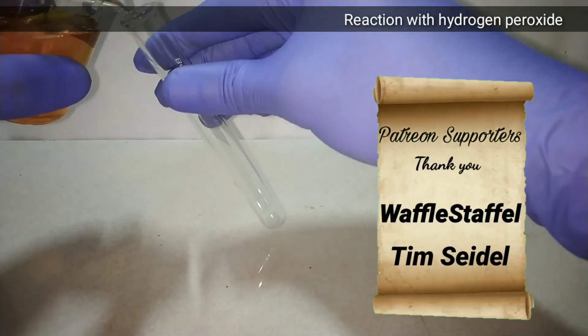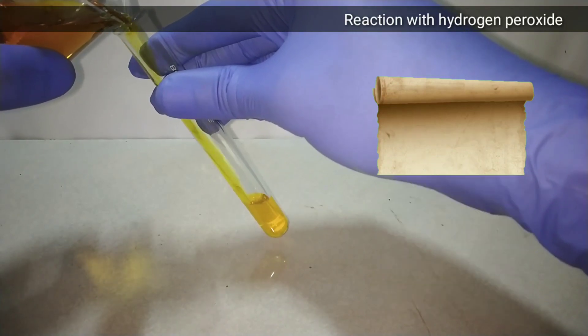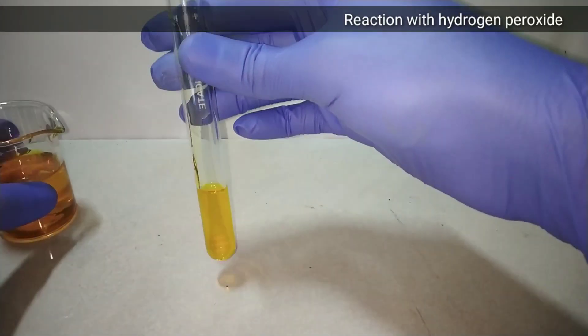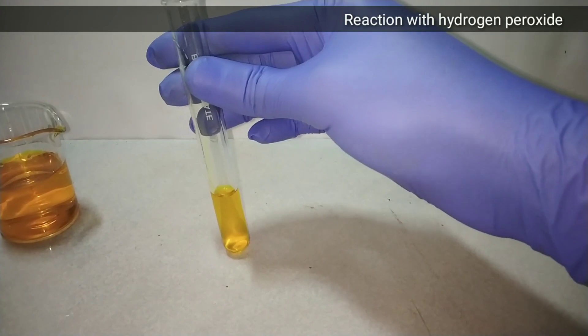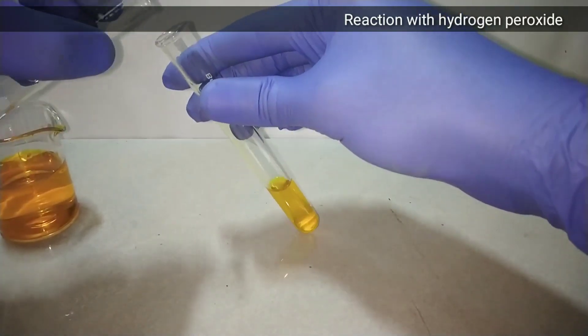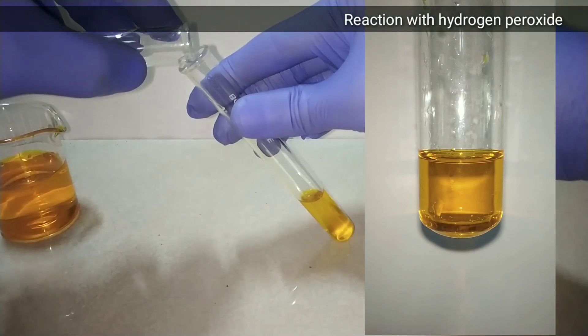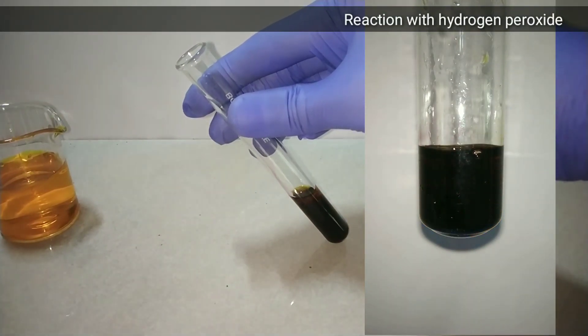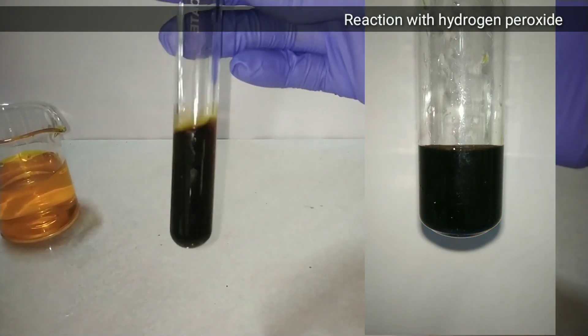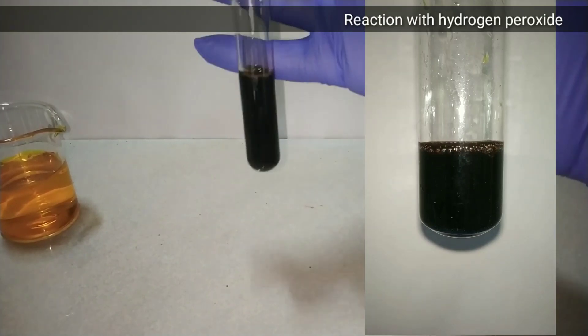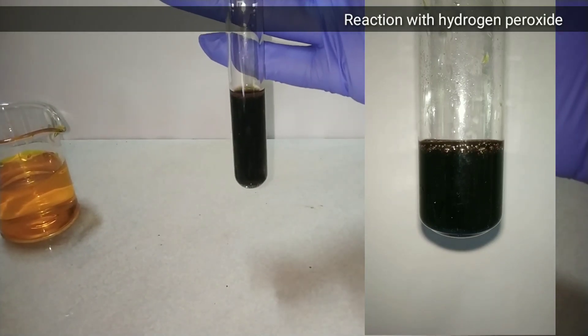Now let us see some reactions with ammonium dichromate. First of all we will be seeing the reaction of ammonium dichromate with hydrogen peroxide. On adding the hydrogen peroxide there is formation of a dark blue colored chromium peroxide formed. There is also a brisk effervescence seen due to release of oxygen gas.